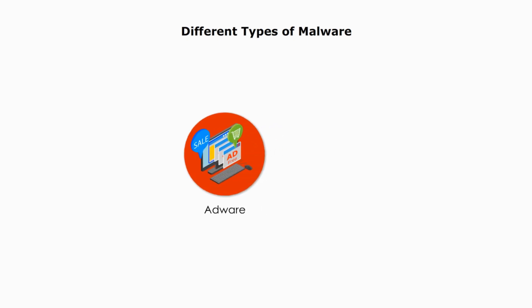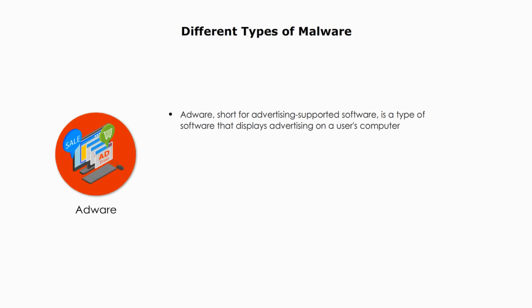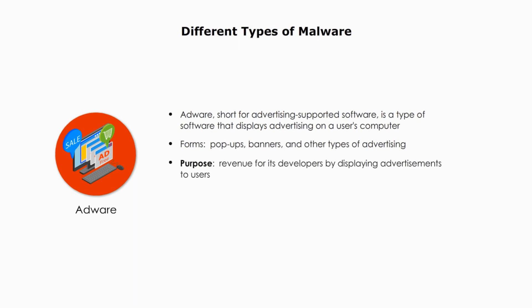Adware, short for Advertising Supported Software, is a type of malware that displays advertising on a user's computer or mobile device. Adware can come in many different forms, such as pop-ups, banners, or other types of advertising. The main purpose of adware is to generate revenue for its developers by displaying advertisements to users. While some adware is legitimate and harmless, other forms of adware can be potentially malicious and harm your device by slowing it down, hijacking your browser, and possibly installing viruses or spyware. To sum it up, adware can be good, bad, and ugly.